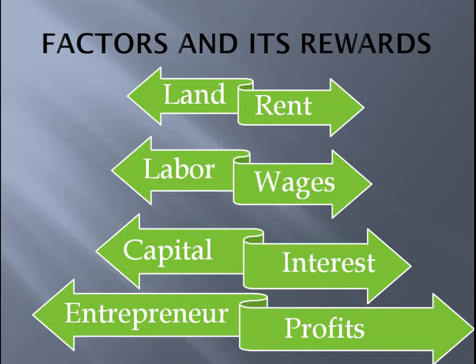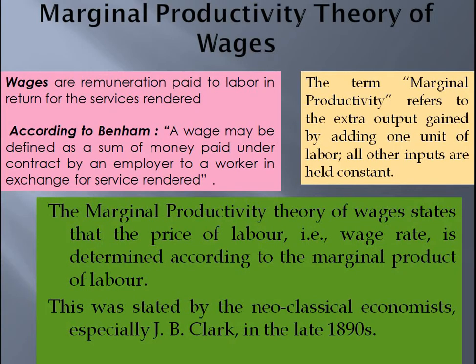We are learning about the rewards or prices paid to the different factors of production. On the left-hand side: land, labor, capital, and entrepreneur. On the right side, their rewards: for land we give rent, for labor we give wages, for capital we give interest, and for the entrepreneur we give profit.